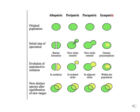In sympatric speciation, there is an original population and then genetic polymorphism occurs in some individuals or a small population, so they are unable to breed with others and form two new species. In parapatric speciation, there is an original population and then a separate niche is formed, and these two populations get separated because of these separate niches and form two new species.